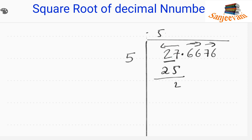We drop the second pair 66, giving us 266. As before, we double 5 to get 10. Next we place a digit here and check: that number multiplied by itself appended to 10 should be equal to or less than 266.